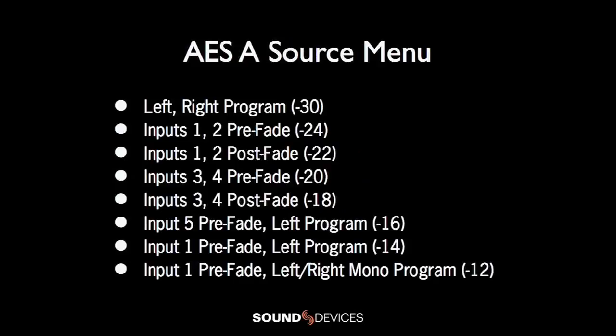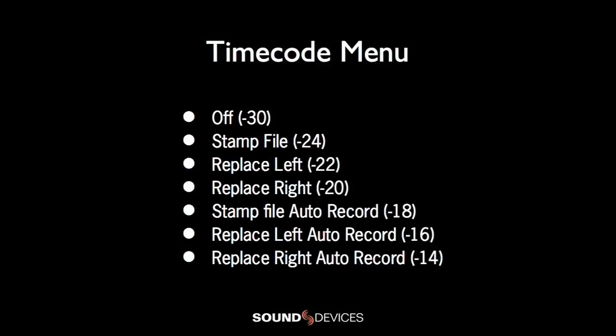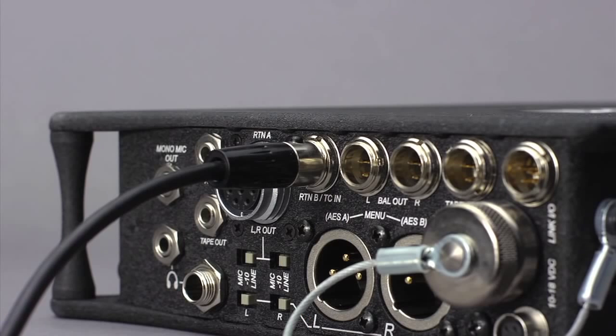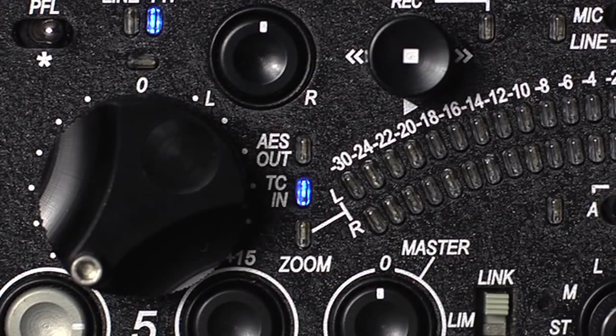Select your sample rate in the sample rate menu — 48 kilohertz is most common for production. The AESA menu selects the program source for the recorder; you can select from eight preset routings. Finally, activate timecode if necessary in the timecode menu. There are multiple timecode options available. Remember, the 552 requires an external timecode source.